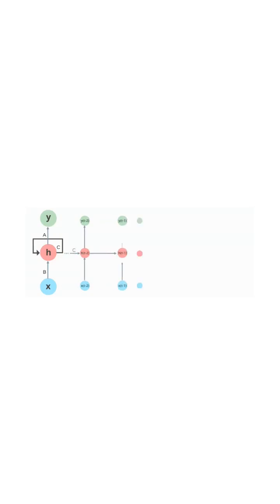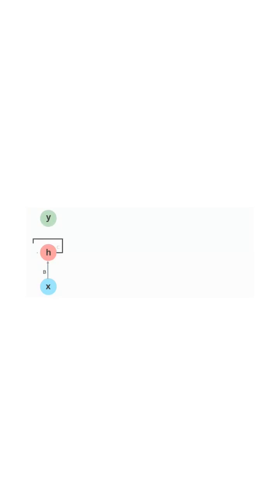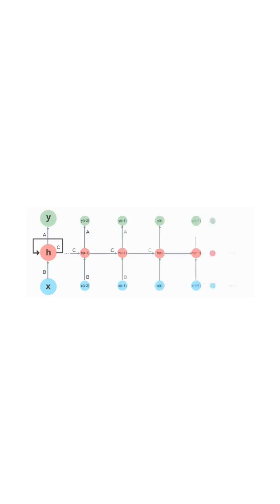Training an RNN involves exposing it to a large dataset, allowing it to learn patterns and relationships in the data. The network's hidden state captures important information about the sequence it has seen so far. As new inputs are fed into the RNN, the hidden state is updated, and the network generates predictions based on the current input and its memory of the past.